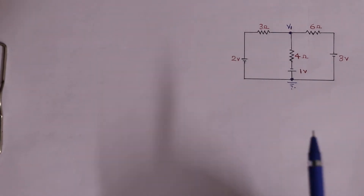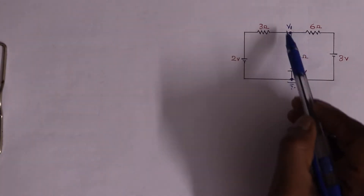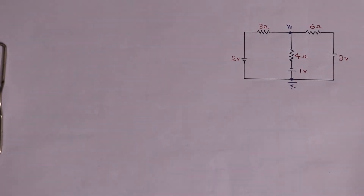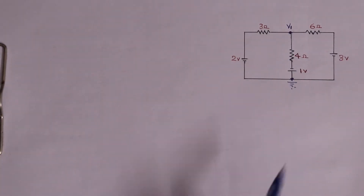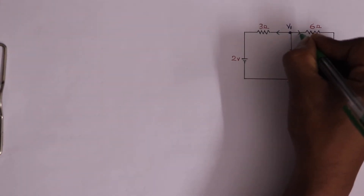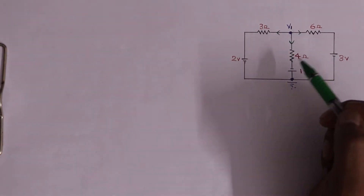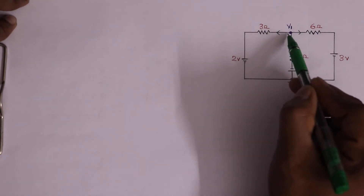We are using KCL: the algebraic sum of currents meeting at a junction is equal to zero. There is a junction, and the algebraic sum equals zero. We use the current sum equal to zero. If we are using a current source, we have a current direction and value. We are using directions away from the junction.